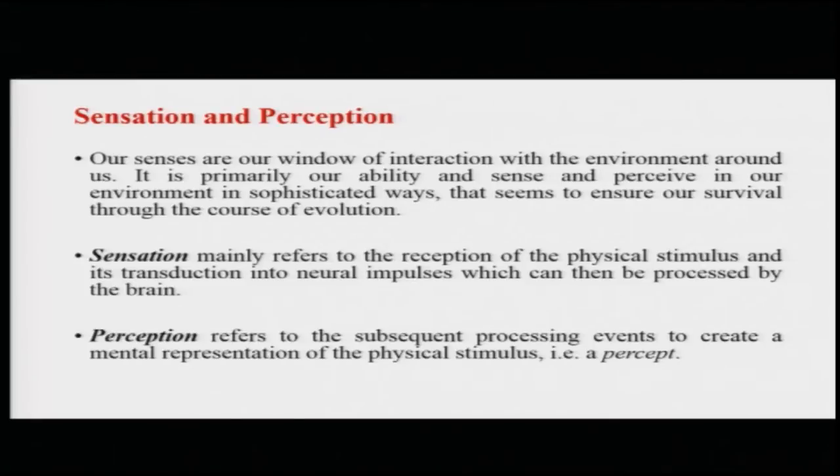Sensation basically refers to the act of receiving the stimulus from the environment and its transduction or conversion into neural impulses which can then be processed by the brain. The sensory organs — the eyes, the ear, the tongue, the nose, and the skin — basically receive all the sensory stimuli that the environment presents to us and convert the sensory stimulation into neural impulses which can then be communicated to the brain.